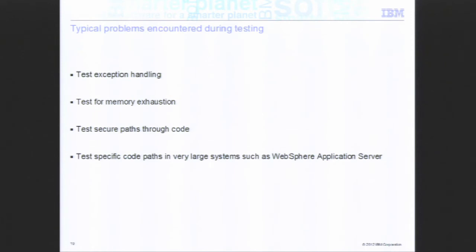Let's look at memory exhaustion. If you consider a large-scale application such as an application server, it will have code to handle out-of-memory conditions — how would you test for that? There are so many different ways an application server could experience memory exhaustion. It's a hard thing to do, and BCI can help with that. Likewise for security paths through code, BCI provides an easy way to encourage the flow to the specific method or function you want to test.